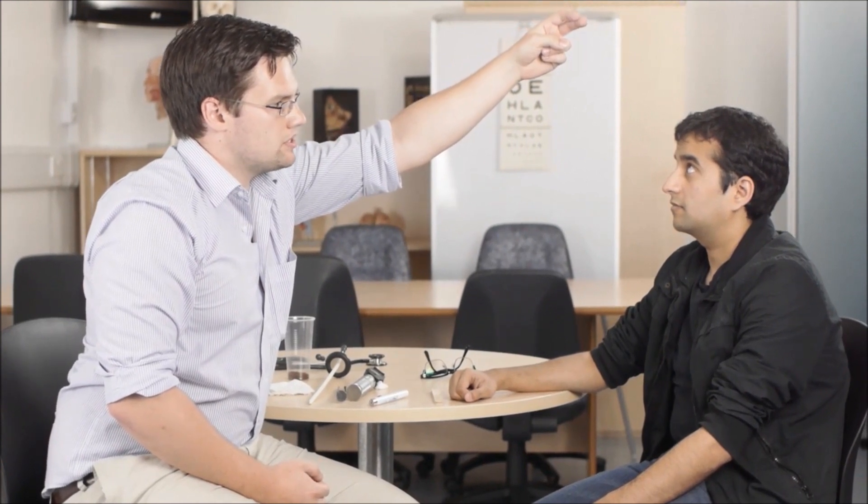Next we're going to assess vertical gaze. Please keep your head still and look at my fingers. You hold this for 20 seconds, looking for any fatigue and ptosis due to myasthenia gravis.